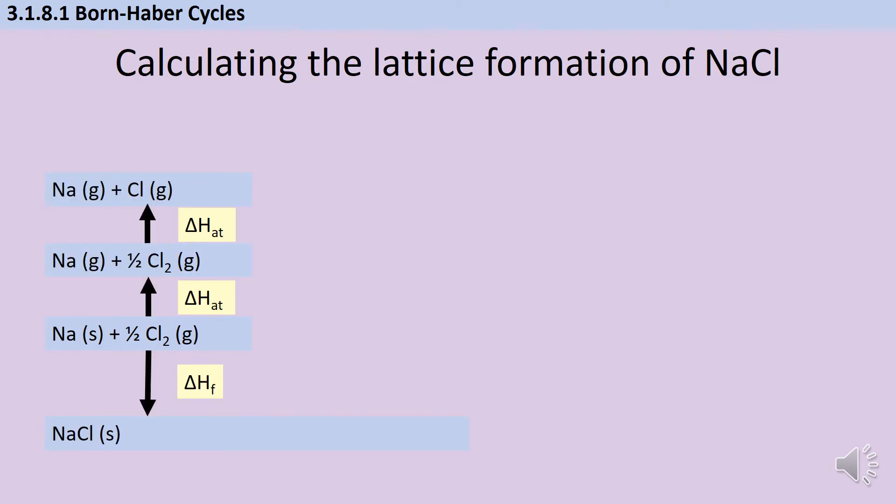and any endothermic processes with positive enthalpies are going to be represented by arrows pointing up. The first enthalpy I'm going to add to my diagram is the standard enthalpy of formation of the ionic compound I'm trying to form, so in this instance sodium chloride, and I can label this as delta HF. Because this is an exothermic process, the arrow is pointing down.